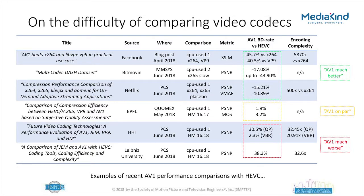Comparing video codec performance is difficult. Many publications from 2018 — from Facebook, Bitmovin, Netflix, and well-known universities — compared AV1 with HEVC, with wildly conflicting conclusions: some claimed AV1 is much better than HEVC, others said it is roughly on par, and some said AV1 is much worse in compression performance. This highlights how difficult it is to compare video codecs.